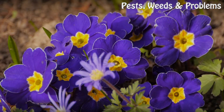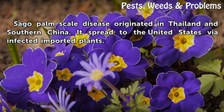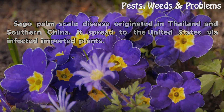History. Saco palm scale disease originated in Thailand and southern China. It spread to the United States via infected imported plants.